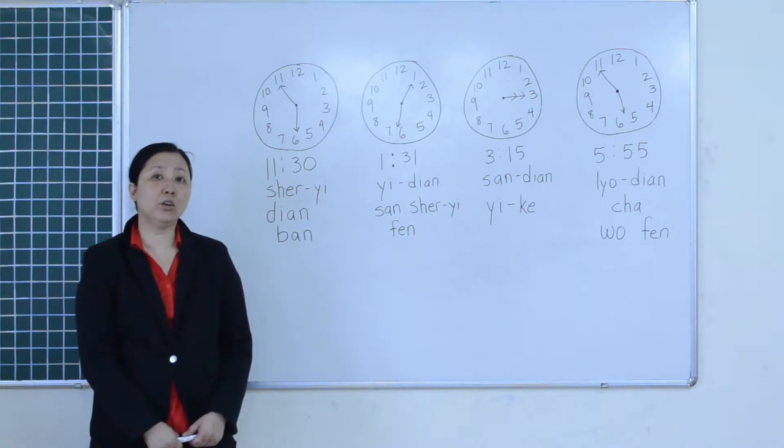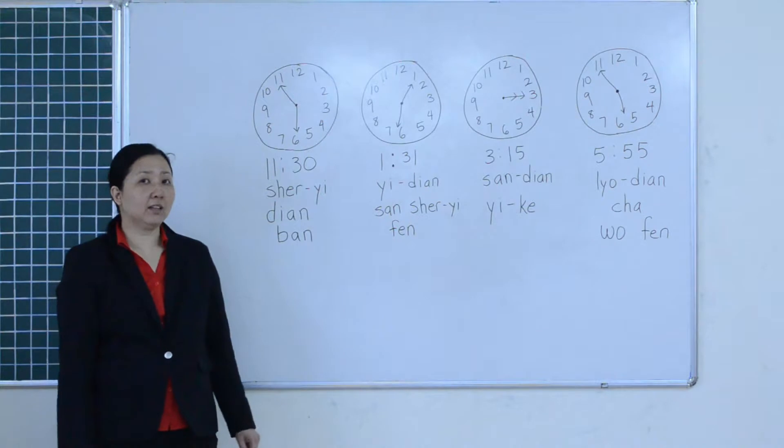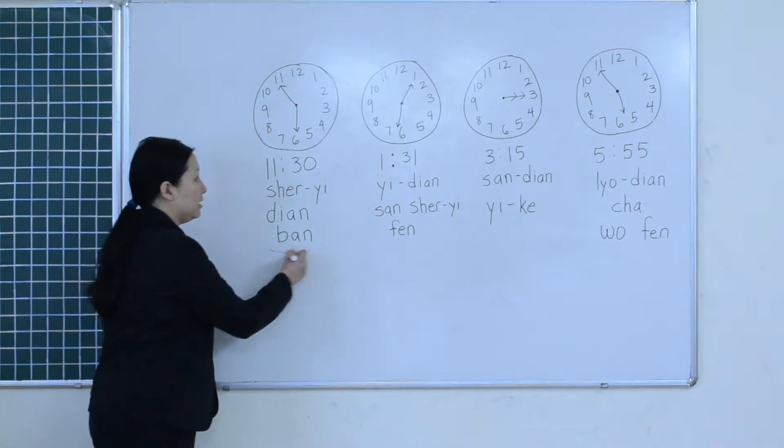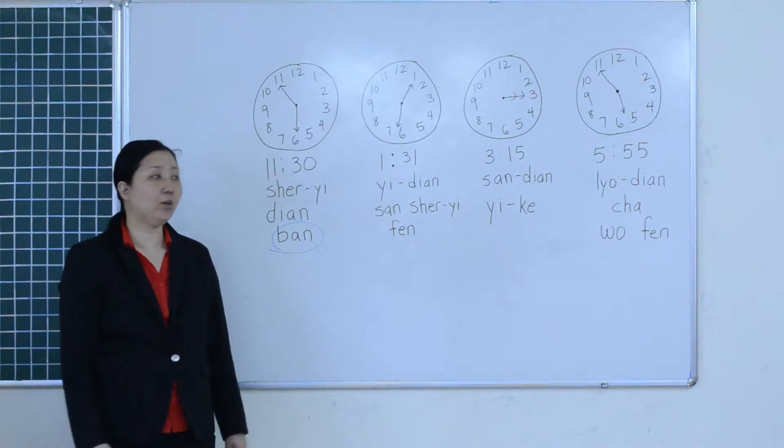You already know how to say the numbers, so how do you say 11:30? You say 11:30 and 半 over here refers to half past the hour.